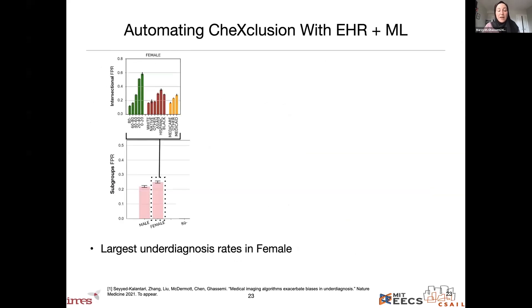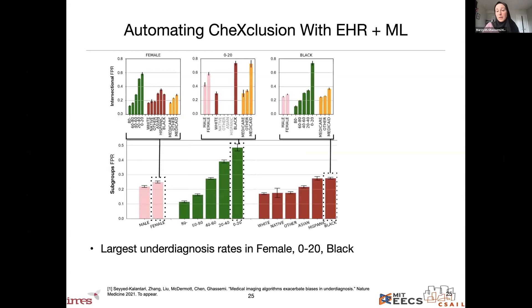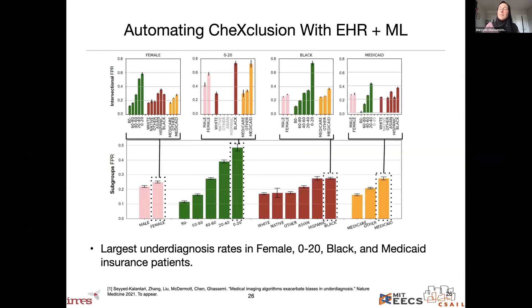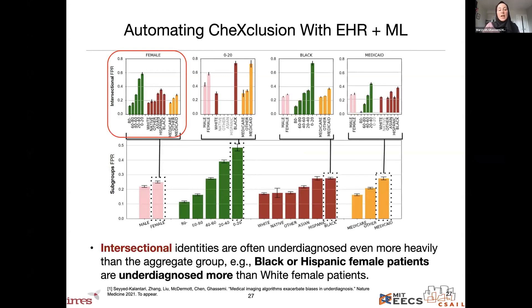State-of-the-art models for chest X-ray-based diagnosis — several of which have been cleared by the FDA — have higher under-diagnosis rates in female patients, young patients, Black patients, and Medicaid insurance patients. The rate is actually much worse for intersectional identities: Black or Hispanic female patients are underdiagnosed more than white female patients. This is not about training data — this is the model's under-diagnosis rate on unseen test data.